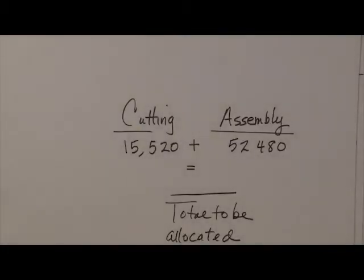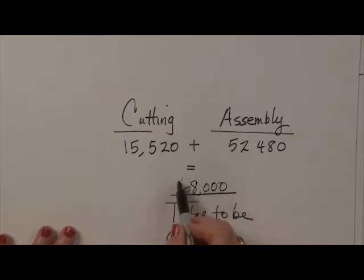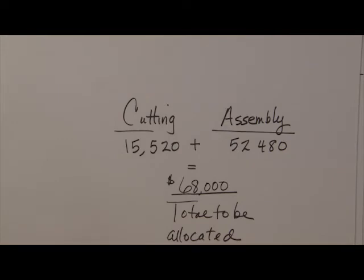Question six sums this up: all costs are ultimately allocated to production departments — in this case, cutting and assembly. The cutting department will have $15,520 allocated to it, and the assembly department will have $52,480. Adding these two allocations together gives us $68,000, which is the total of all service department costs, ultimately landing on the shoulders of the two production areas.